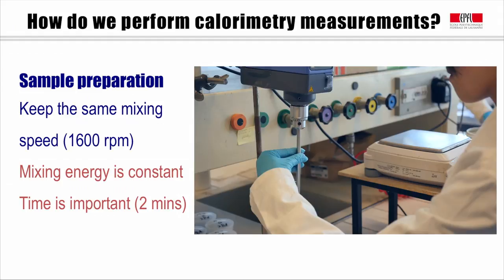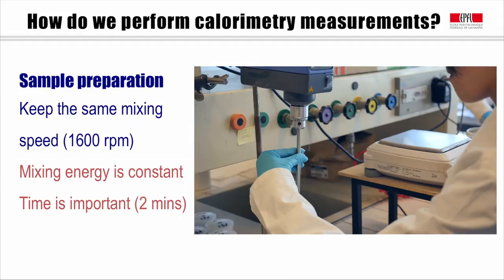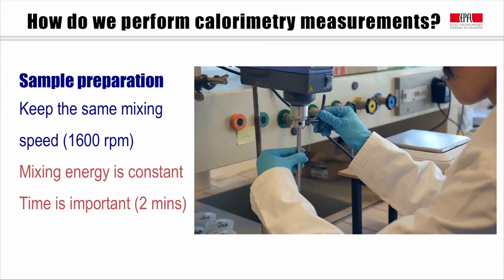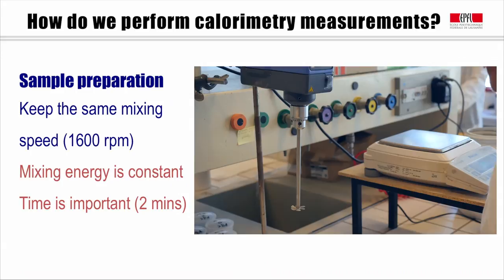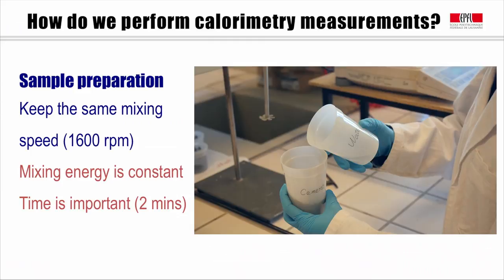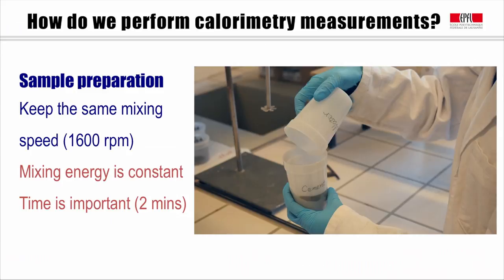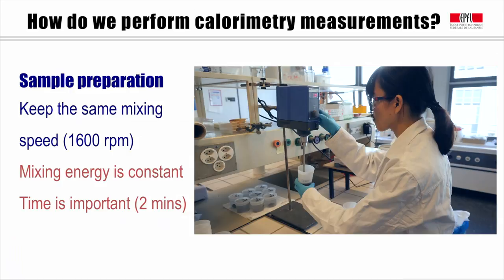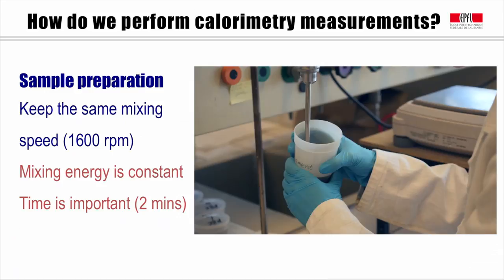Here is another demo that shows how we can mix the sample for calorimetry tests. First of all, we need to adjust the position of the pedal to make sure to have a good mixing efficiency. We put the water into the cement and quickly put the 250 ml plastic container under the mixer. While mixing, we need to move up and down or left and right to make sure the sample is homogenized. Don't forget to write down the time you pour the water inside.